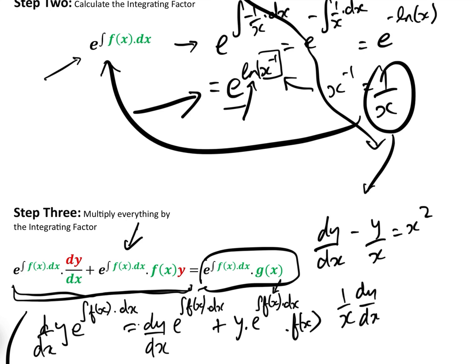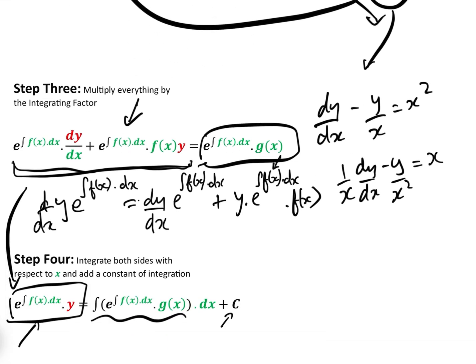So, that gives us 1 over x dy dx minus y over x squared equals x. Step three, nice and easy.